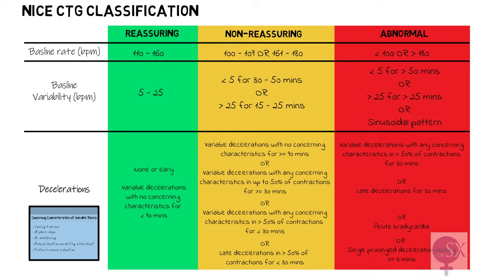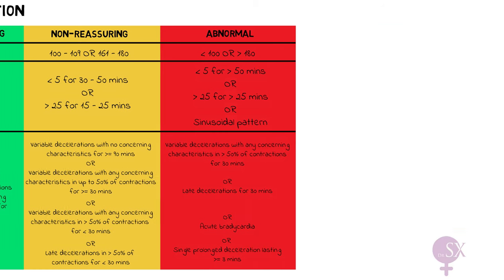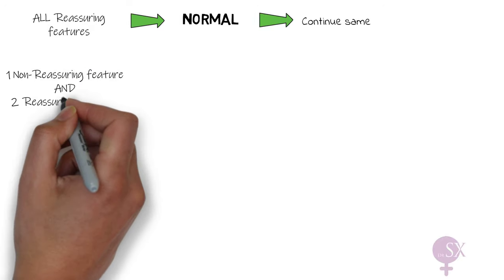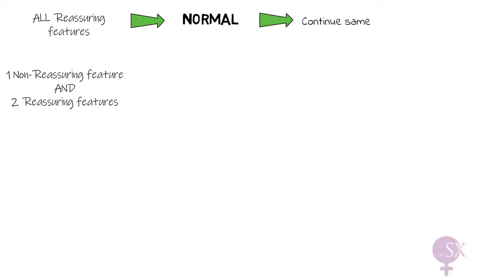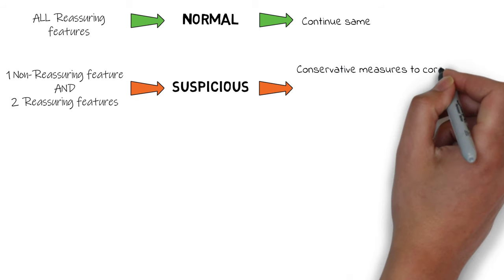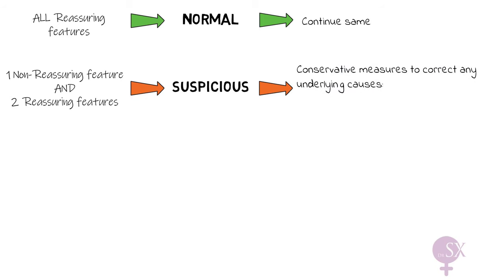This table is very important when understanding what we need to do with our CTGs. If a CTG has all features which are reassuring, this is defined as a normal CTG and we don't need to do anything. If we have one non-reassuring feature and two reassuring features, this is defined as a suspicious CTG.